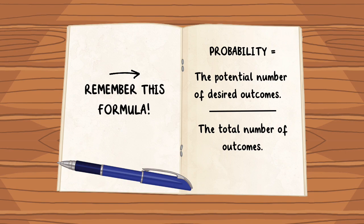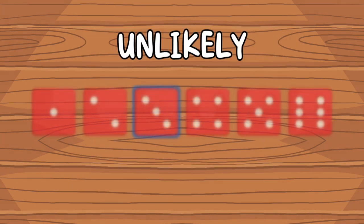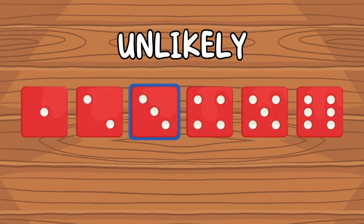For example, we could describe the probability of getting a three when we roll a dice as unlikely, but to give it a numerical value, we need to think about how many possible outcomes there are.